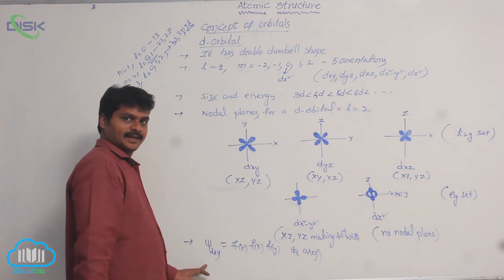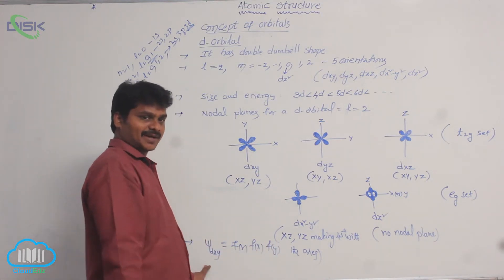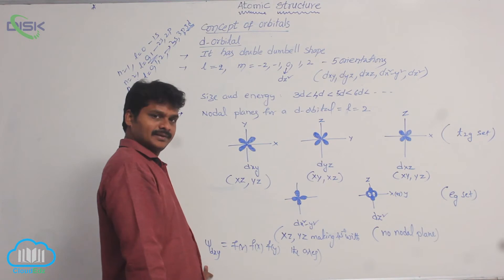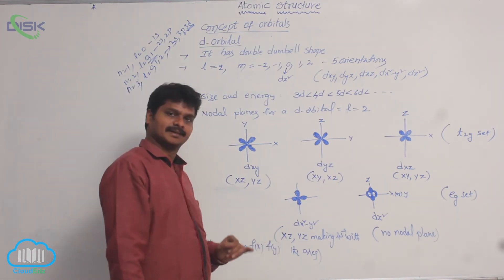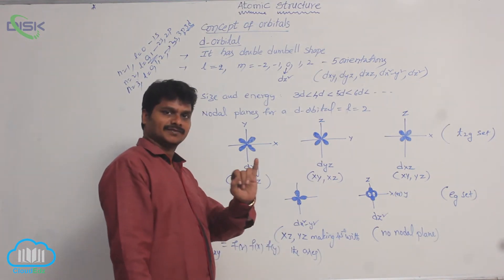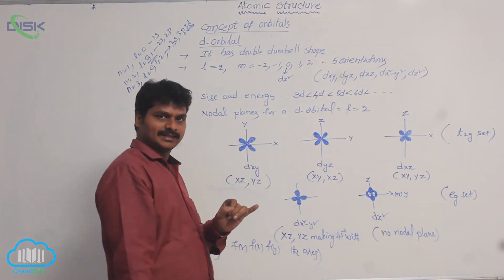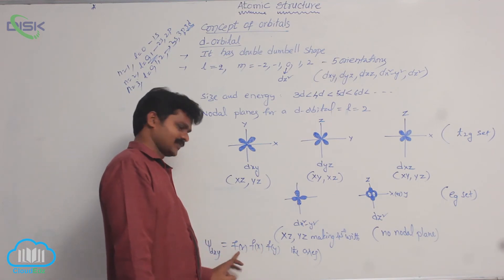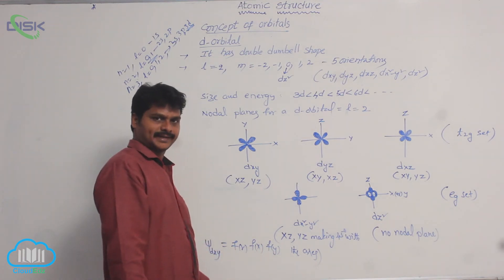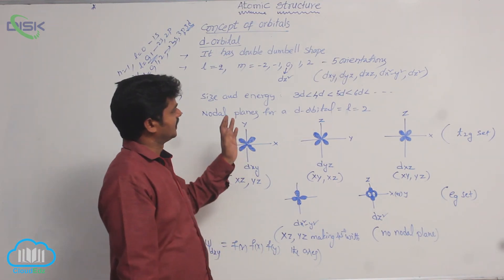That means a d-orbital is a function of three parameters: distance from the nucleus and two directions. So, this is about d-orbitals.